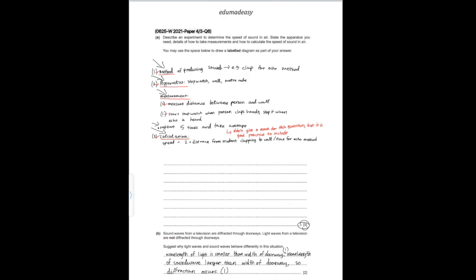Using the clap and echo method: the apparatus needed is a stopwatch, a wall, and a meter rule. The measurements to take are the distance between the person and the wall, and the time from when the person claps to when the echo is heard. For calculations, speed = 2 × distance from student to wall, divided by the time for the echo.